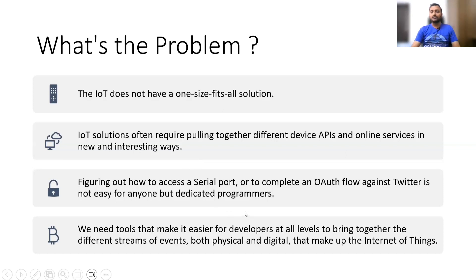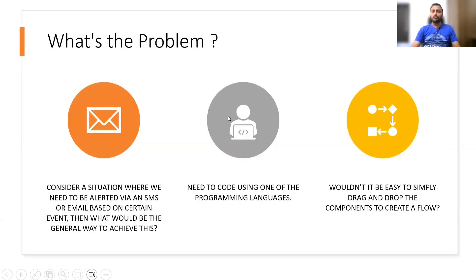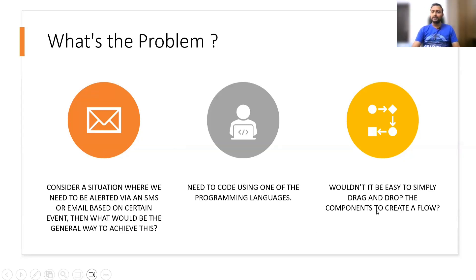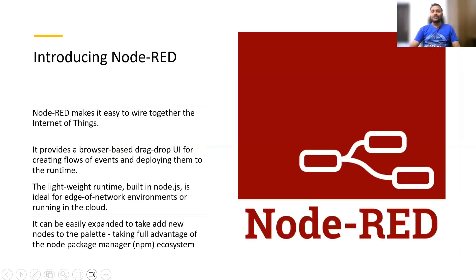To make these things easier for all kinds of developers, Node.js will be very useful. Consider a situation where you need to be alerted via SMS or email based on a trigger event — how can you achieve this? In general, you would need to program it using different programming languages. Wouldn't it be easier to create simple drag-and-drop components to create a flow? Yes, Node-RED solves that. We can use different components, wire them together, and create a flow.